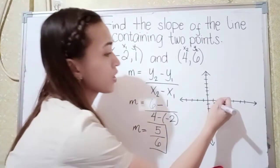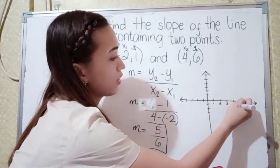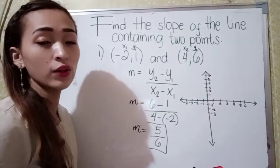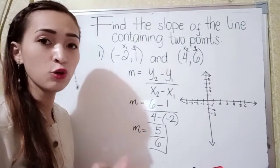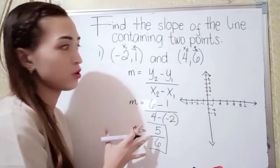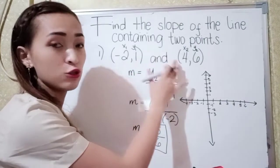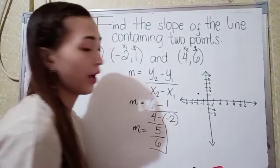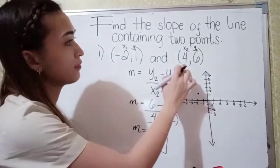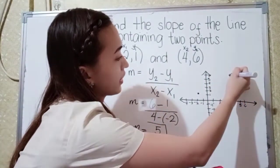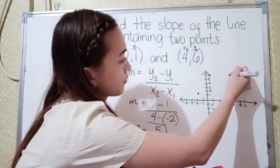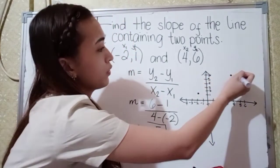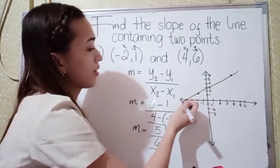Let's plot the points first. Assuming that you don't know the formula, we're going to plot these two points. So negative 2, 1 is plotted here. Next we have 4, 6, so 4 and then 6 here. So this would be our line.